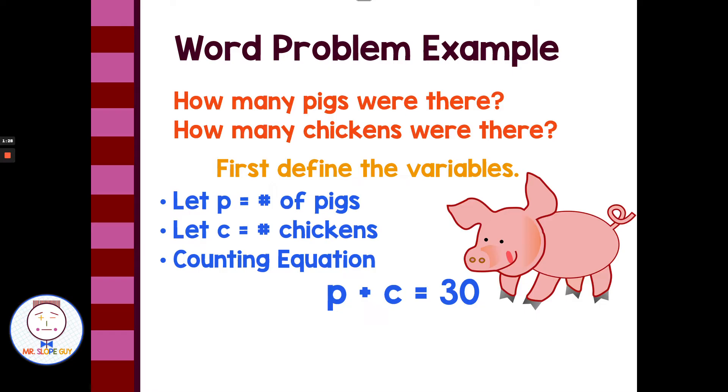And then our next equation is what we would call a value equation. And it has to take into account that pigs and chickens have different numbers of feet. Pigs have four feet and chickens have two feet. So we want each number of pigs to multiply by four because they have four feet, and each c to multiply by two because each chicken has two feet. We put that together into an equation and we have 4p plus 2c equals 84.